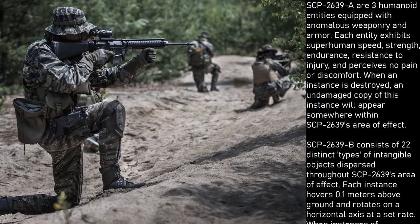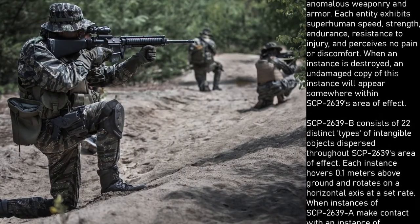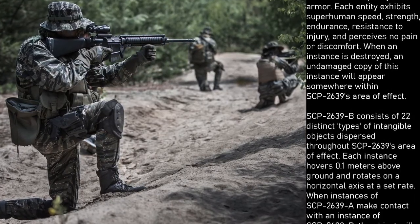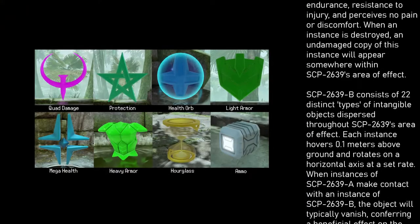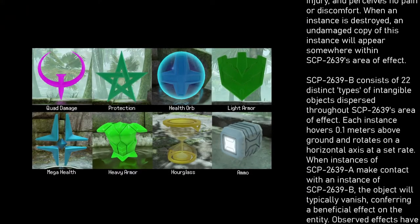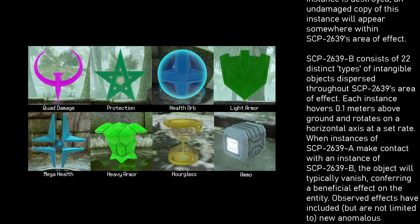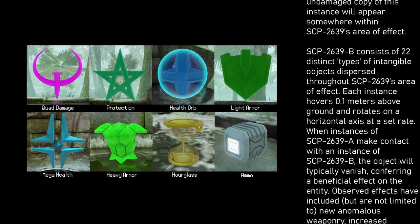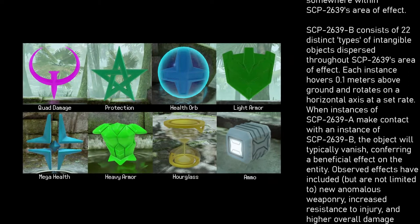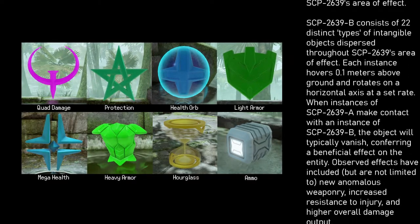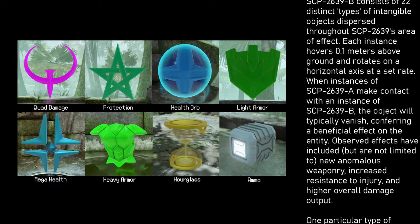When an instance is destroyed, an undamaged copy will appear somewhere within SCP-2639's area of effect. SCP-2639-B consists of 22 distinct types of intangible objects dispersed throughout SCP-2639's area of effect. Each instance hovers 0.1 meters above ground and rotates on a horizontal axis at a set rate.